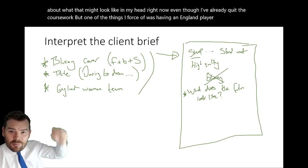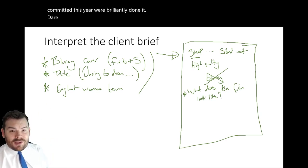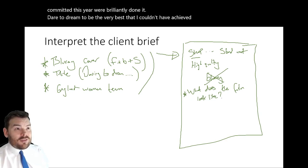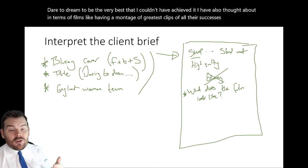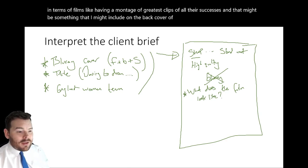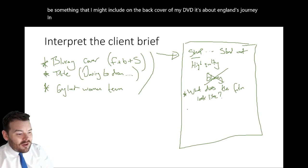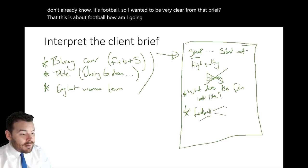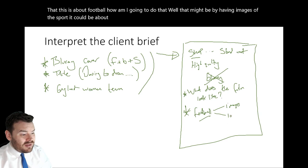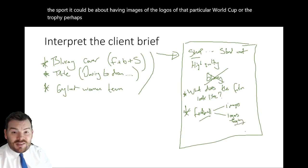If I think of a football film called Daring to Dream, I've got all sorts of ideas. One of the things I thought of was having an England player going — yes, victory, congratulations — they've dared to dream to be the very best they could, and they've achieved it. I've also thought about having a montage of greatest clips of all their successes, which might be something I include on the back cover. It's about England's journey in the World Cup, so interpreting that — well, this is football, so I want it to be very clear from the brief. I can do that by having images of the sport, logos of that particular World Cup, or the trophy.